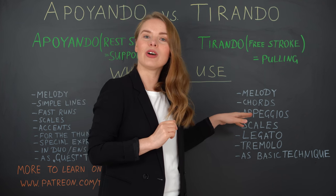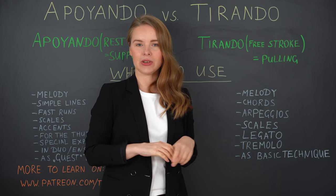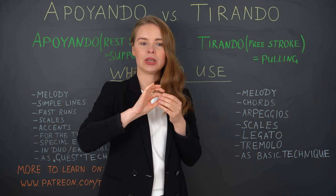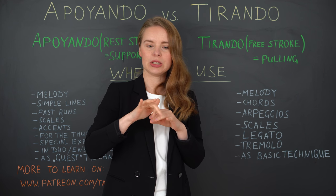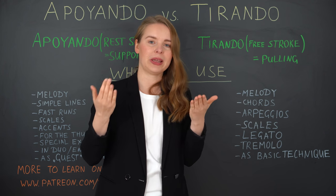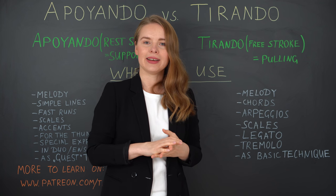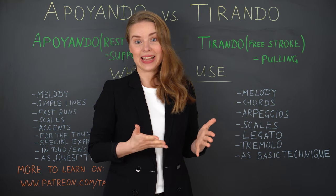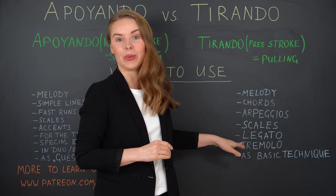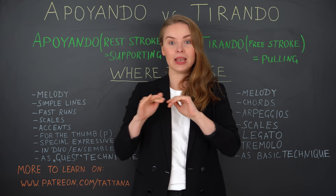We also have legato — and I mean the musical concept of legato, not slurs or hammer-ons. Playing tirando on different strings in an arpeggio-like pattern, you can create a really beautiful sound cloud. And for tremolo, we use tirando, definitely not apoyando.